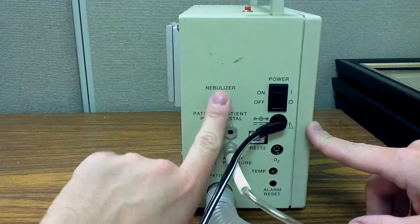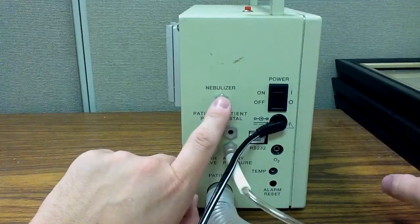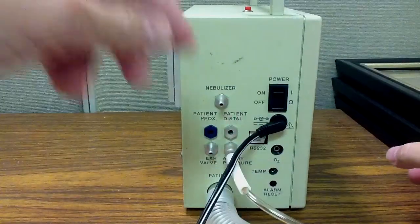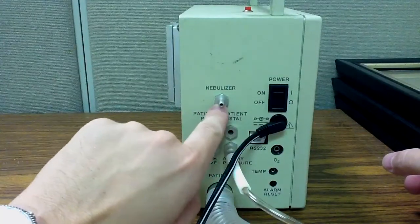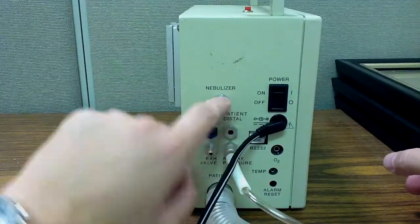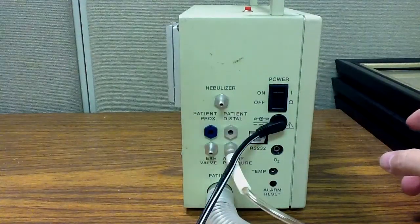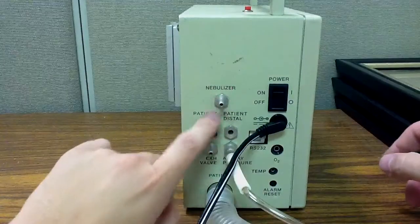Hook your nebulizer in line and instead of attaching the nebulizer tubing to the ventilator, you attach it to an oxygen source and you turn it on 8 liters a minute.